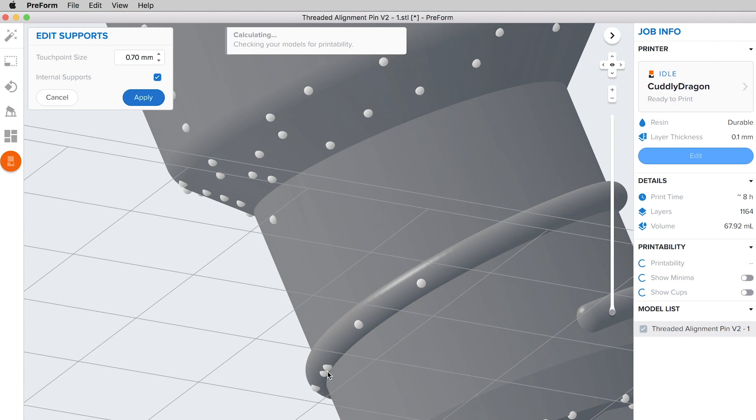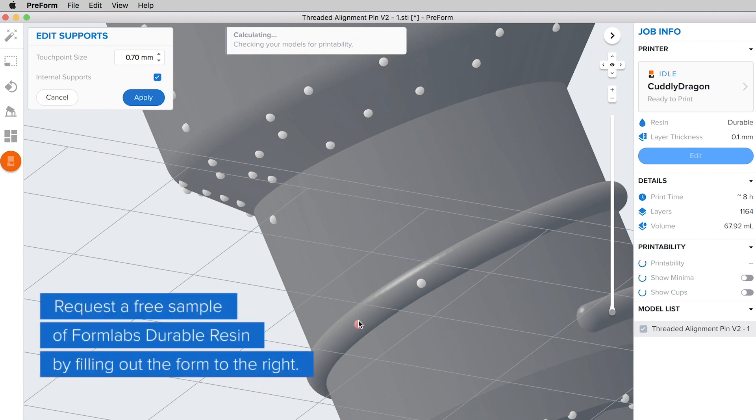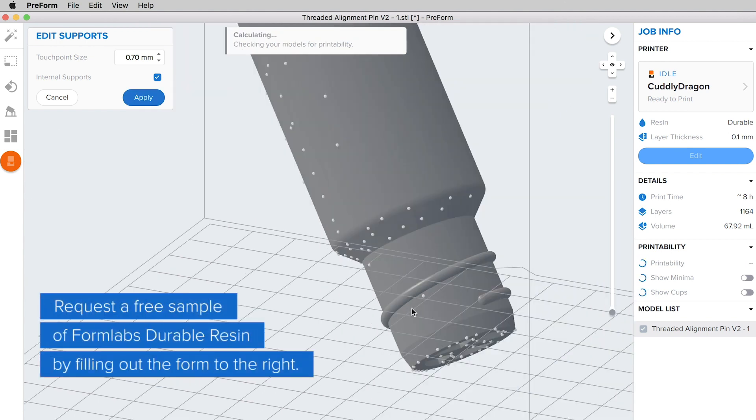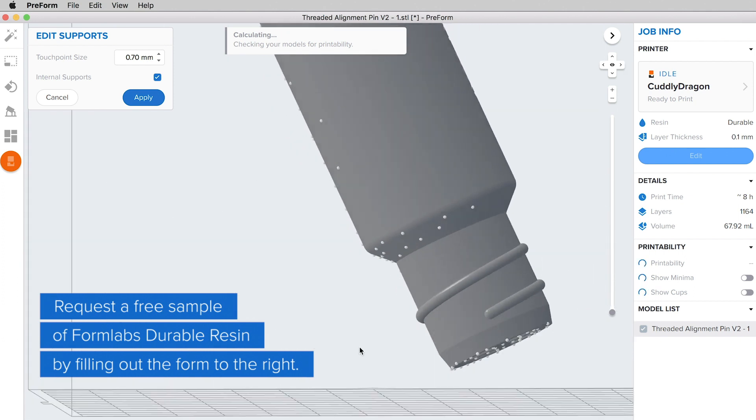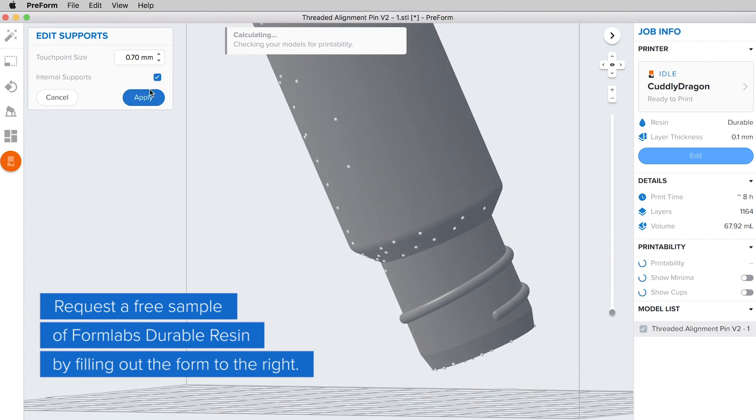In this case, we are using Formlabs durable resin as our material. The low surface friction of durable resin makes it a good fit for printing parts with threaded features built in.